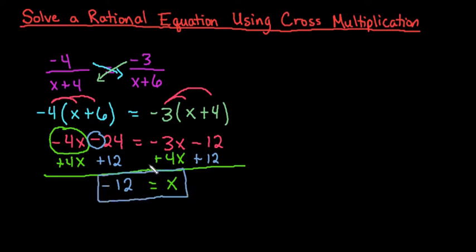So this appears to be our solution. Remember with rational expressions that you always have to check because it is possible when we plug it back in that it will not work. So with this, we would plug in the negative 12 for x.